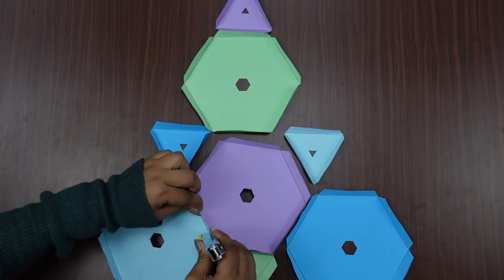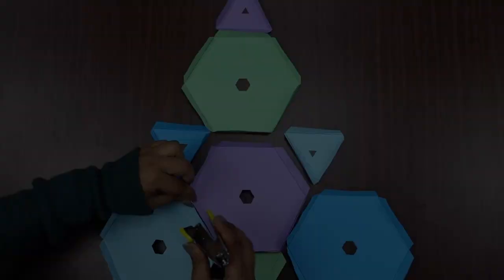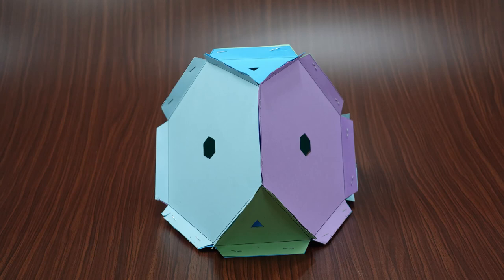When all the flaps are joined to the side flaps, we see the truncated tetrahedron form.